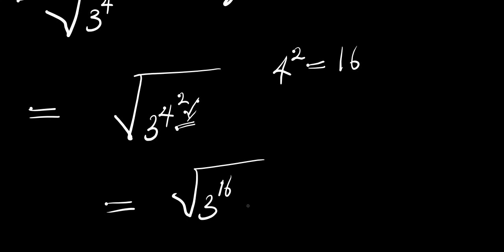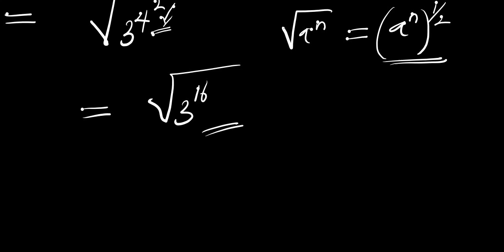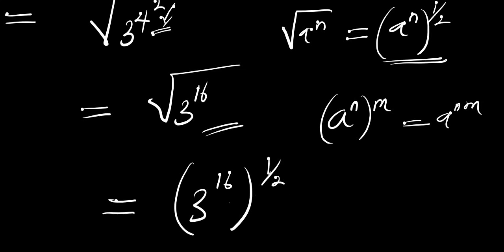So what is 3^16? If you have the square root of a^n, this equals a^(n × 1/2) because of the square root. Applying this identity here, we get 3^(16 × 1/2). Using the identity a^(n×m) = a^(nm), multiplying 16 by 1/2 gives 8, so we have 3^8.